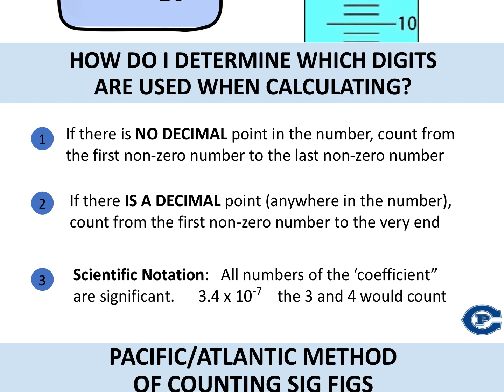To do this, if there is no decimal present in the number, I will count from the first non-zero number to the last non-zero number. If there is a decimal point that is present anywhere in the number, I'm going to count from the first non-zero number to the very end of that decimal. If I'm dealing with scientific notation, all numbers in my coefficient are considered significant. In this case, I would have two sig figs because both the 3 and the 4.